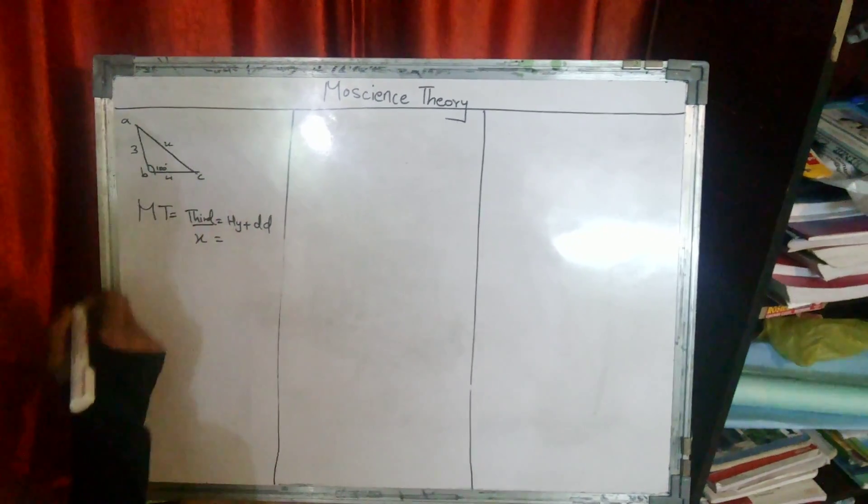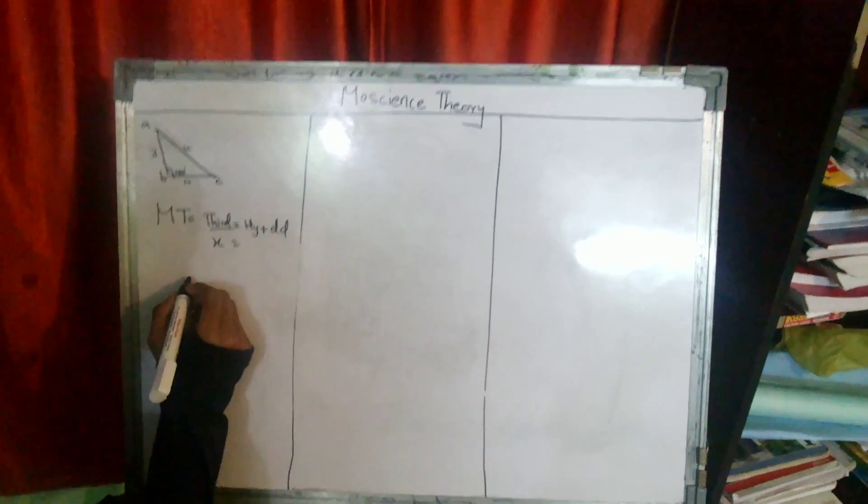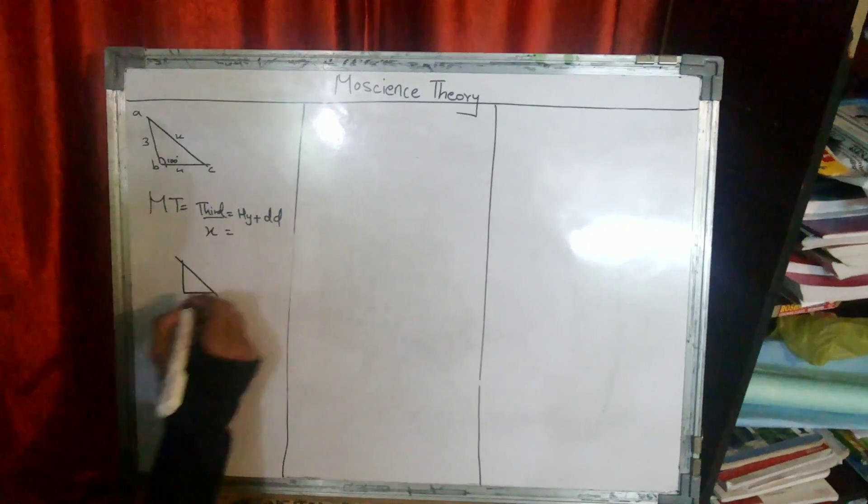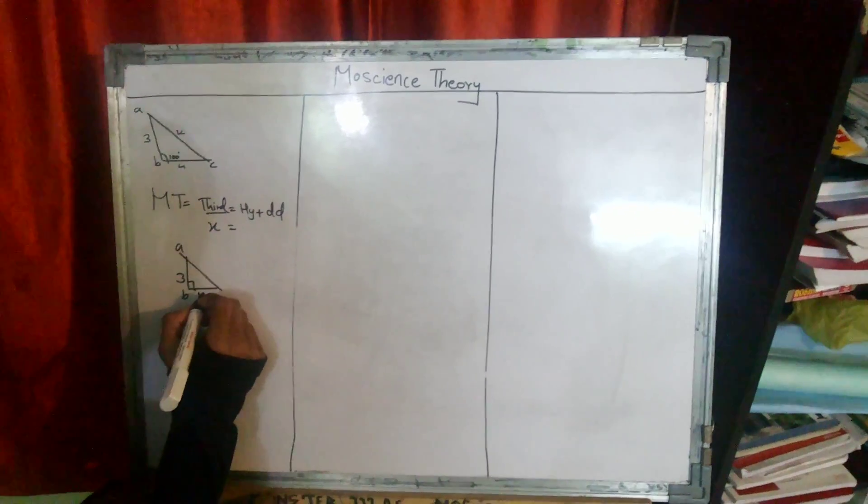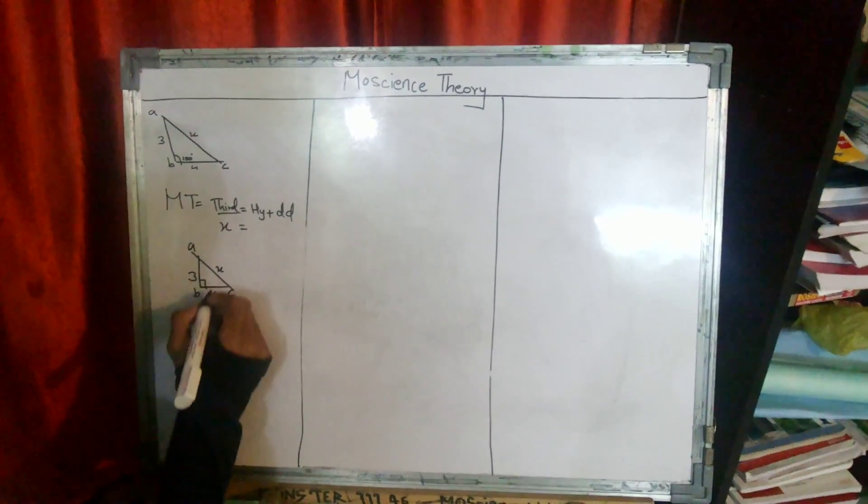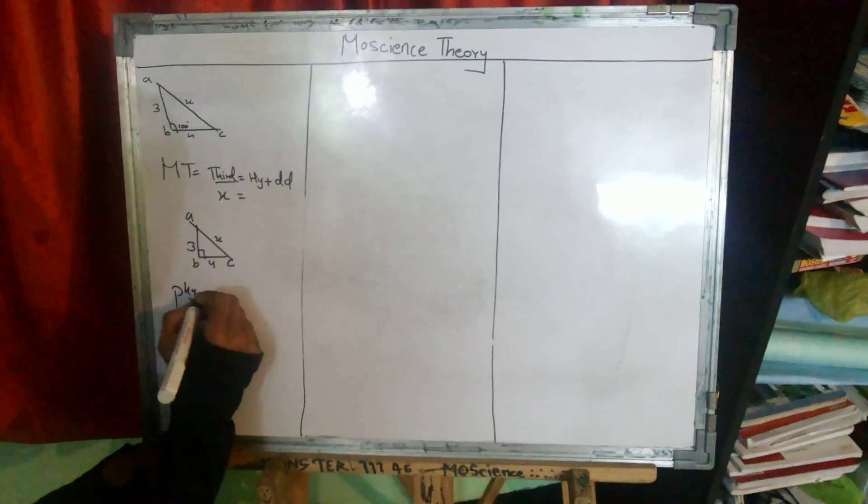Hypotenuse, so for this triangle, hypotenuse find. For this triangle we will compare the same measurement to 90 degrees. If this is 3 for A, B is 4, C is X. So for 90 degree hypotenuse, Pythagoras theorem.